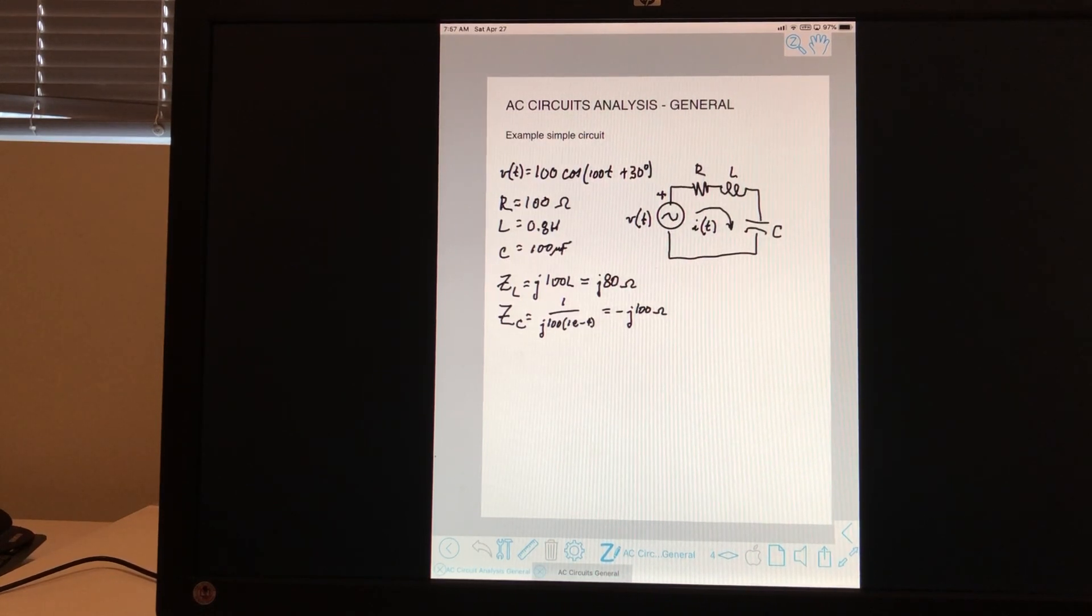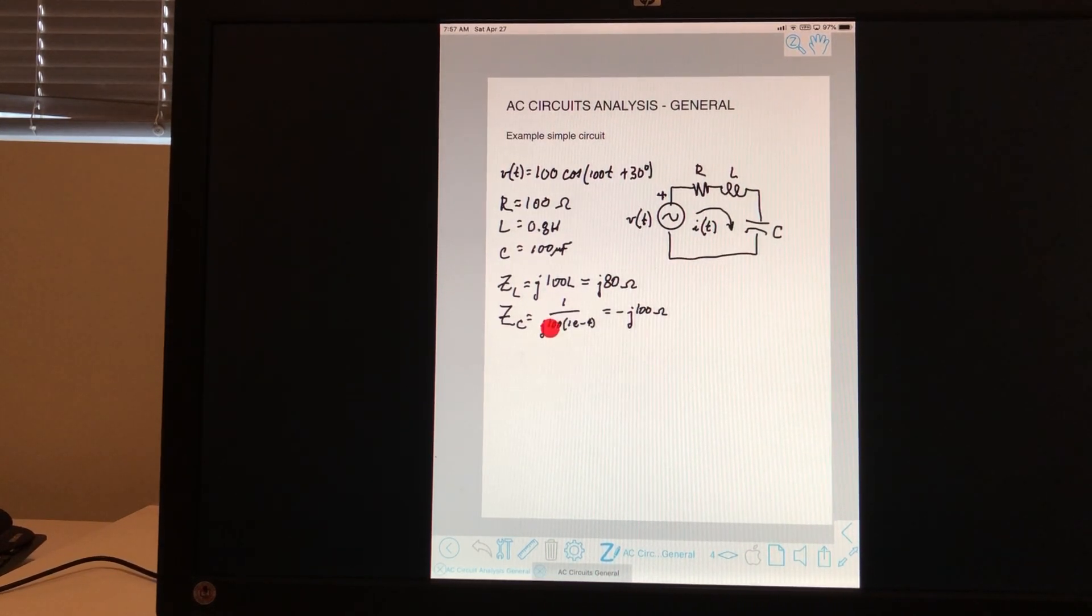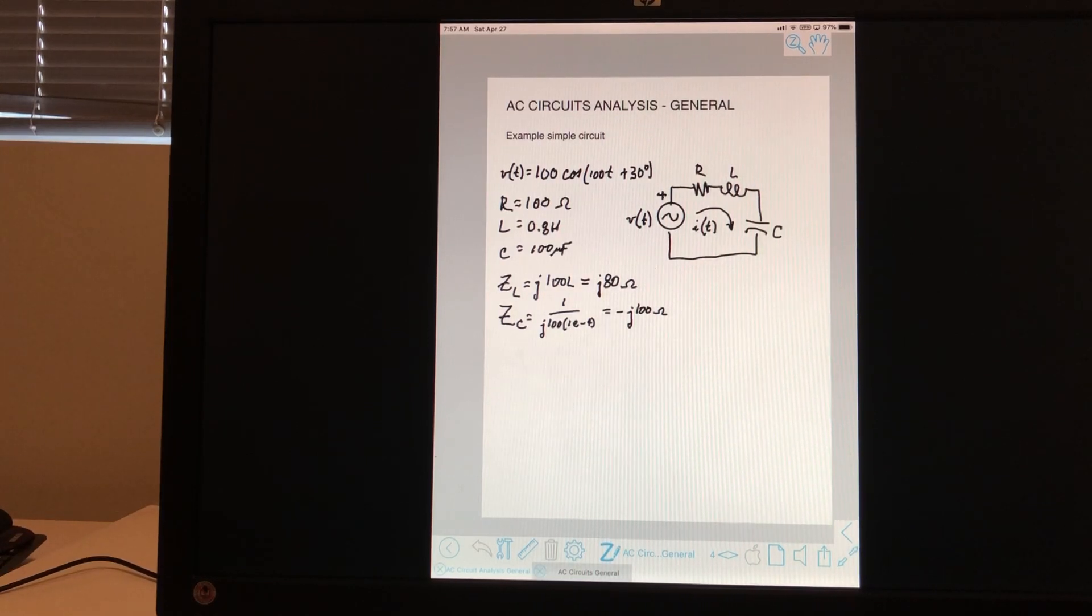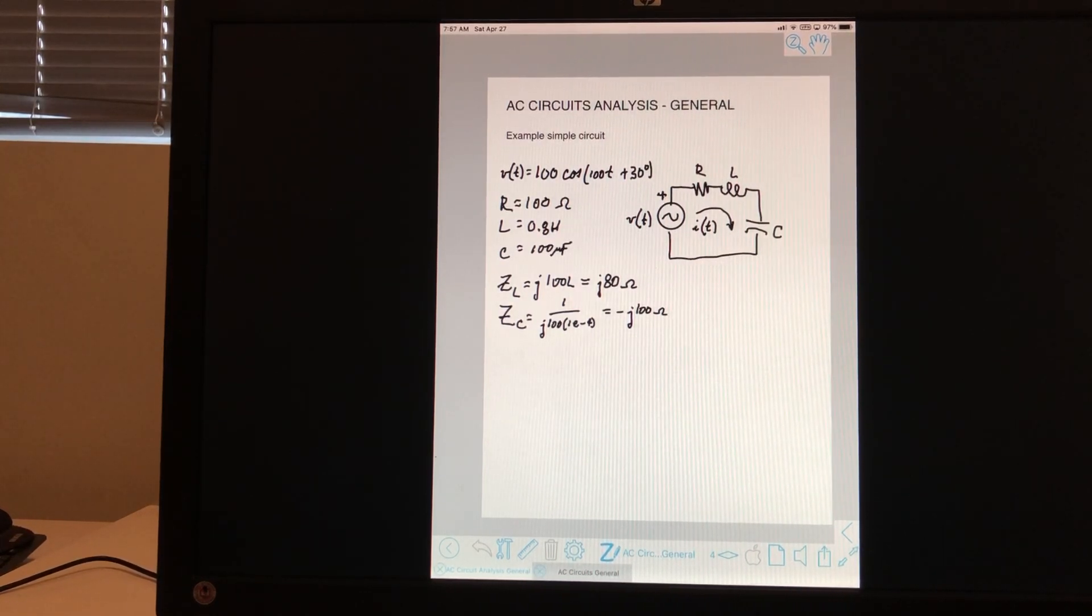And then over here for the capacitive impedance, 1 over J100 times 100, which is the omega, and then 100 times 10 to the minus 6, which is the same as 10 to the minus 4. And this works out to minus J100 ohms. So we have now the inductive impedances and the resistance.